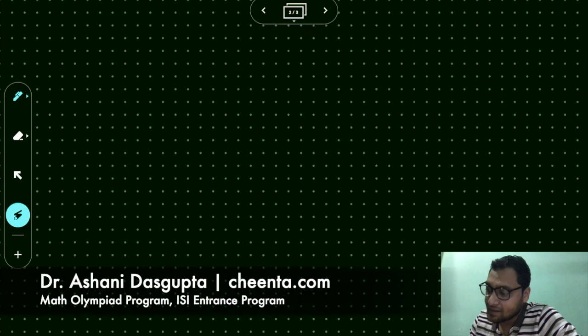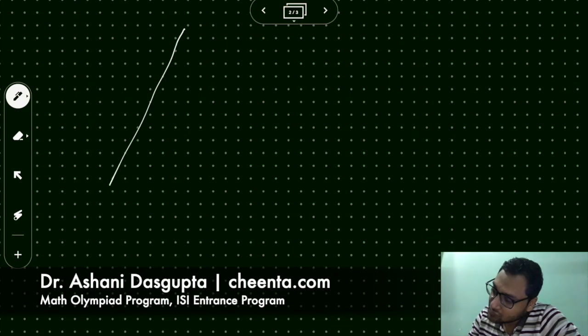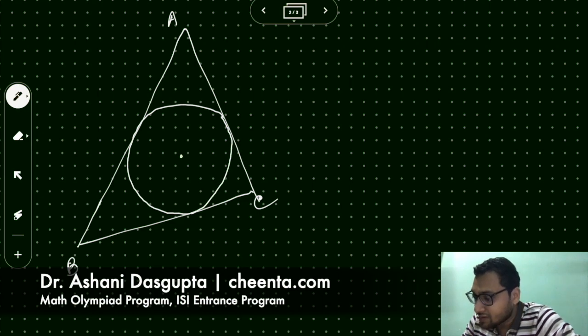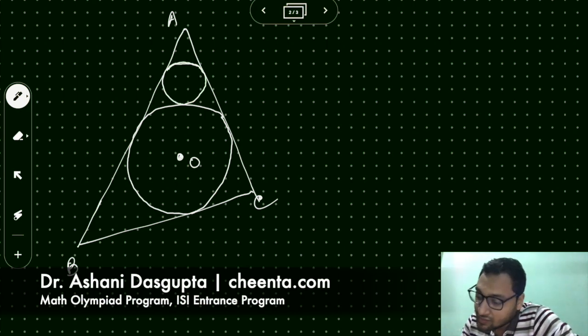So I'll go to a new board and let me use a bigger picture. So this is A, B, and C. And we have this in circle. Let's draw that like this. And the center of the circle is O.